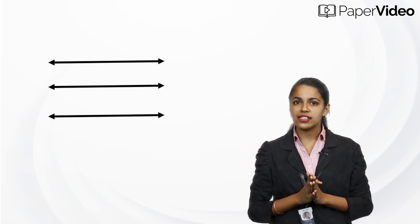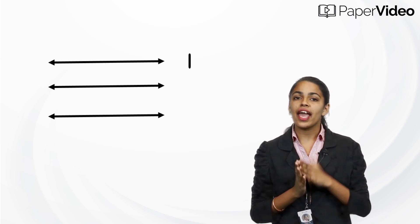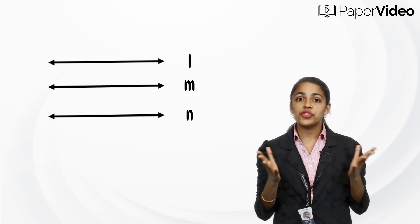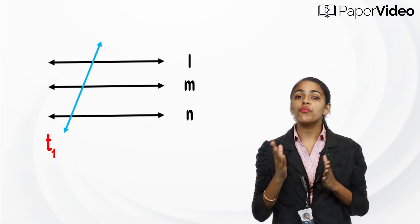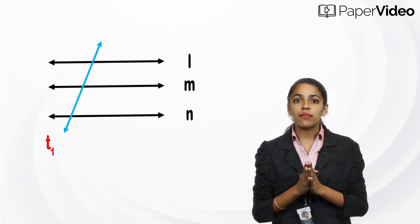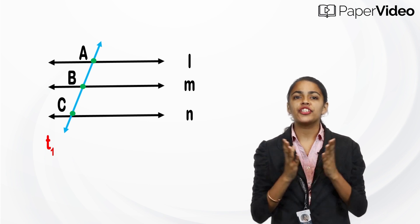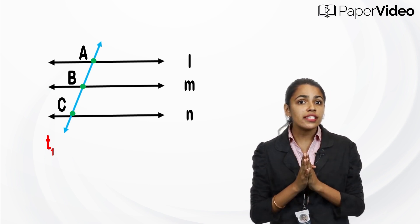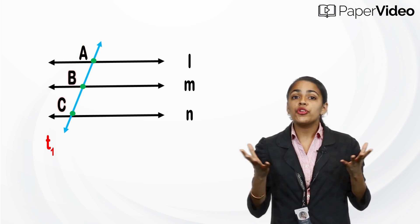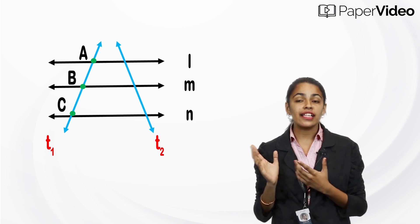Now let's understand the property of three parallel lines and their transversals. Suppose there are three parallel lines l, m, and n. Drawing a transversal t1 intersecting them at points A, B, and C, the transversal t1 makes two intercepts: AB and BC.